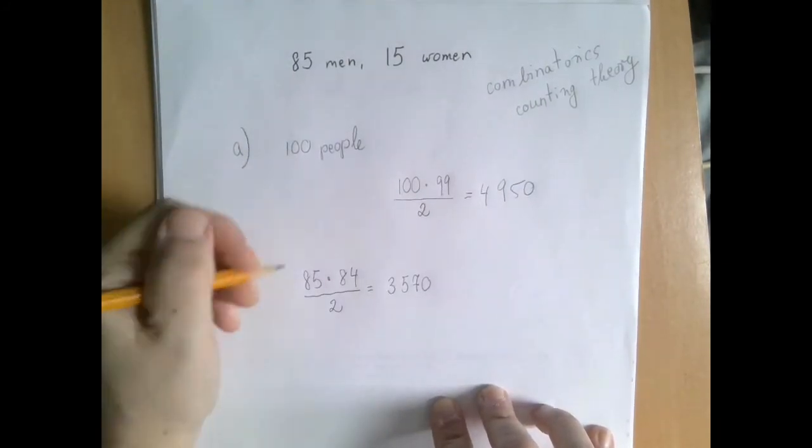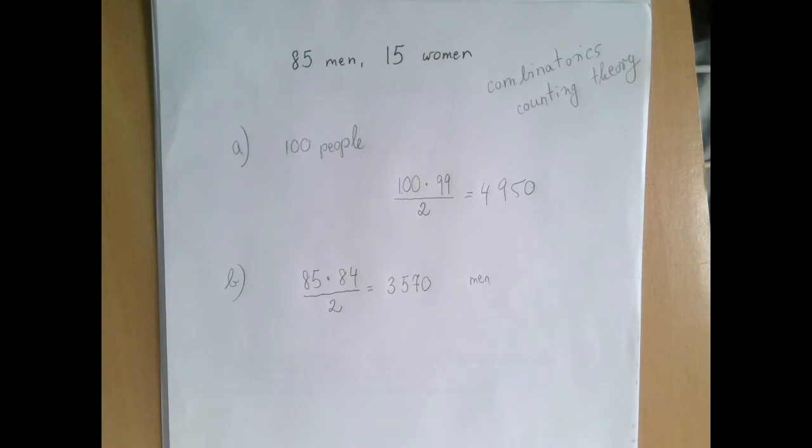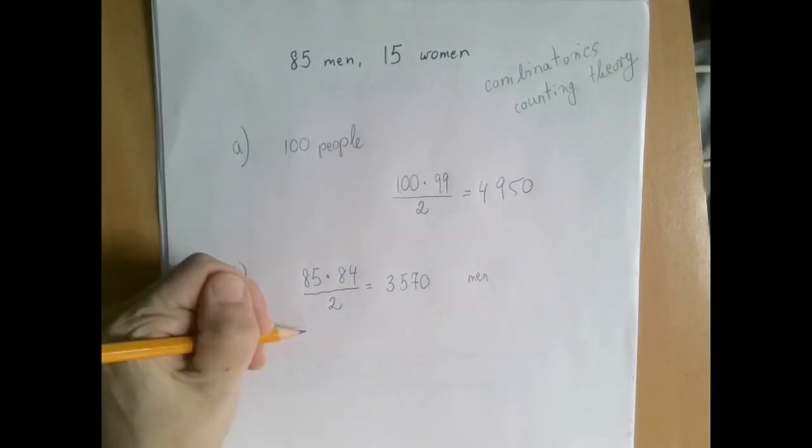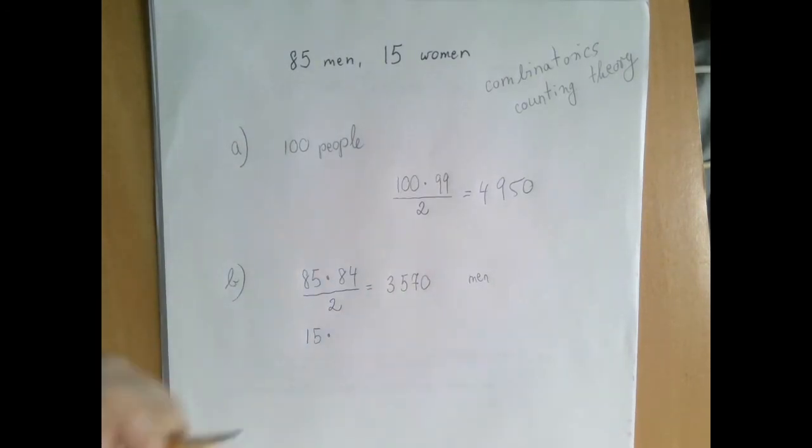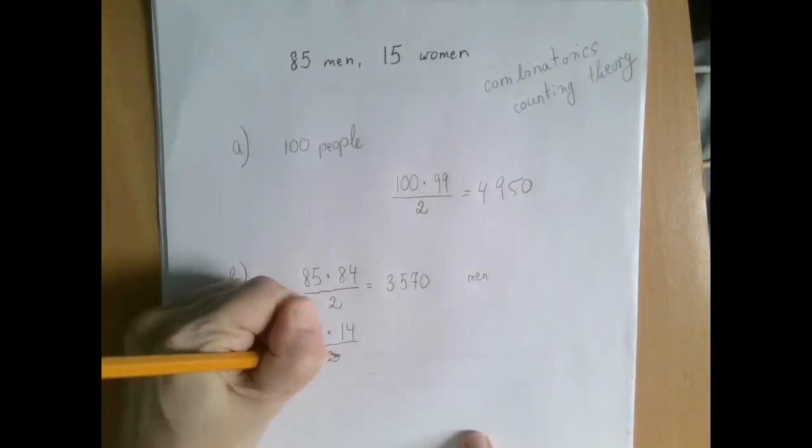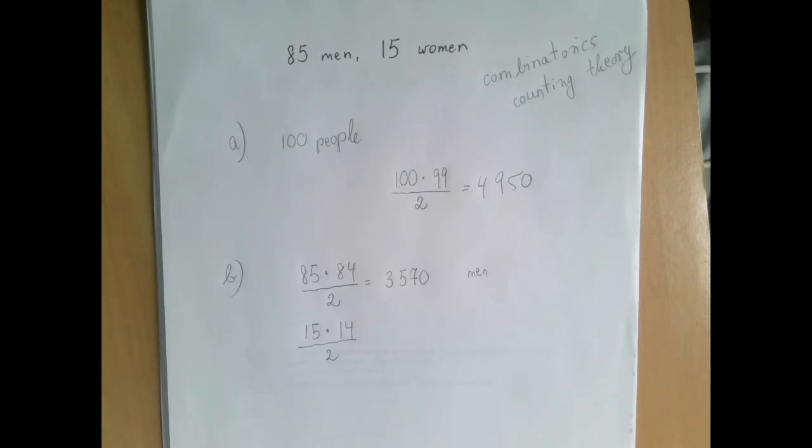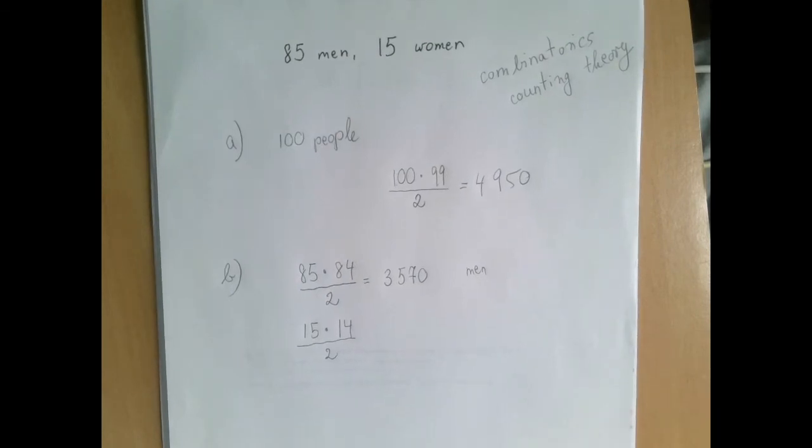Well, that's just the men, right? Now for the handshakes with the women is a similar problem. We ask them in the other room, there are 15 people. We ask them all. Each of them will tell us that they shook 14 hands, and we counted every handshake twice. Therefore, the correct answer is going to be 15 times 14 divided by 2, which is 105.